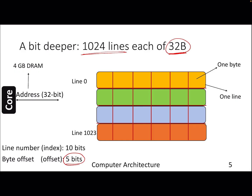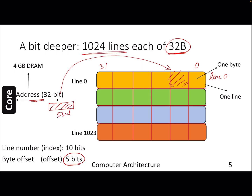For example, this is the entire line 0, and you have byte numbers 0 to 31. In the address from the processor, you should have 5 bits that will tell you to fetch a particular byte. You need 5 bits from your address to actually identify a particular byte.